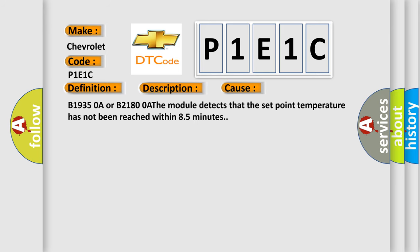B1935 0A or B2180 0A. The module detects that the set point temperature has not been reached within 8.5 minutes.